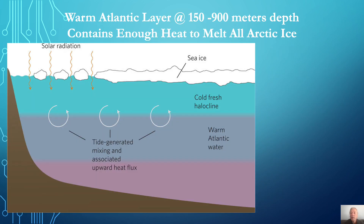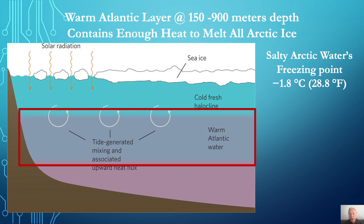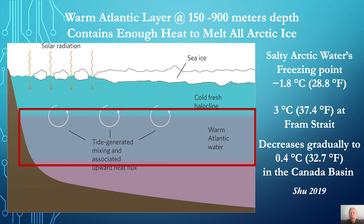The warm inflows create a warm subsurface Atlantic water layer between about 150 and 900 meters. And due to the effects of saltiness, the melting point of Arctic water is negative 1.8 degrees centigrade or 28.8 Fahrenheit. But peer-reviewed studies such as Shu 2019 have determined that the warm water entering the Arctic via the Fram Strait is much higher, about 3 degrees centigrade or 37.4 Fahrenheit, easily melting sea ice.